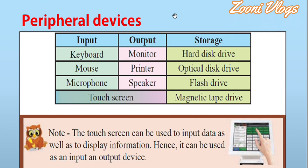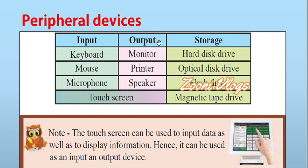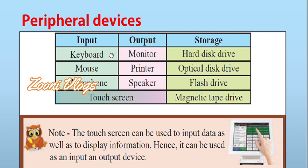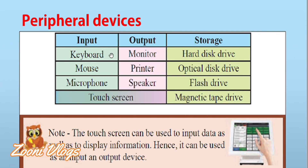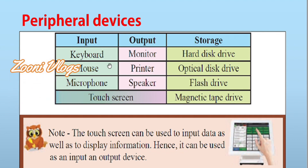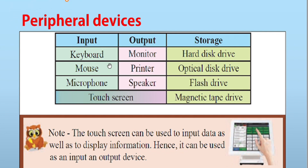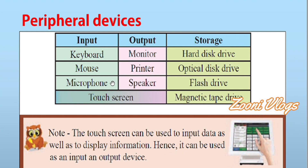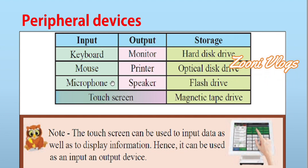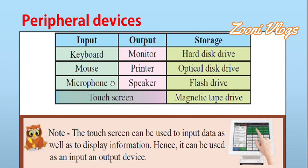We can categorize peripheral devices into three parts: input, output, and storage. For example, the keyboard is an input device — I enter data through the keyboard. The monitor is an output device — I can get data from it. That data is stored in the hard disk. The mouse is another input device. The microphone is an input device, and the speaker is the corresponding output device. Data from the microphone can be stored in a flash drive.